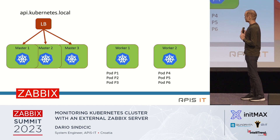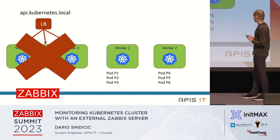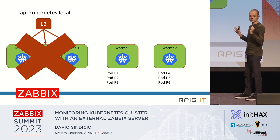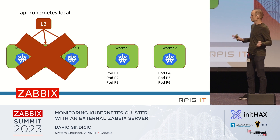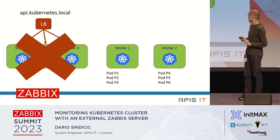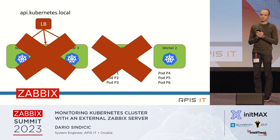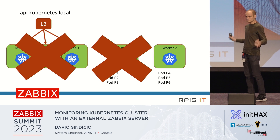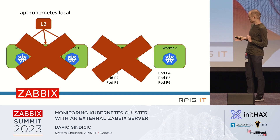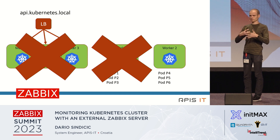Why did we choose this architecture? For example, if you have Master 1, Master 2, and Master 3, and a crash happens on the API side, your pods are still completely running. Monitoring must continue — it has to be the last man standing in an emergency. If Worker 1 is also gone and Prometheus was running on it, all your monitoring is completely down. So we chose this architecture because it gives us completely distributed monitoring where each agent is responsible for its own monitoring and they don't communicate with each other.